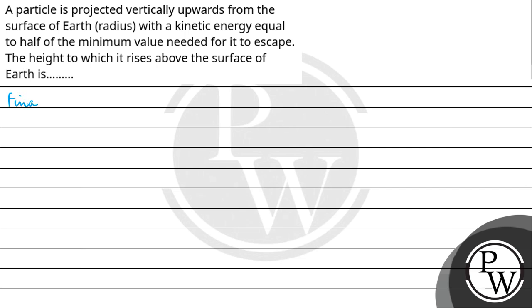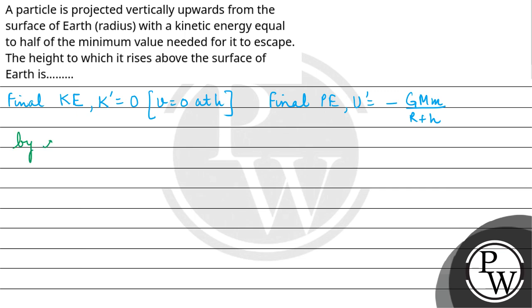So final kinetic energy, let's say K dash, will be zero because velocity at the highest point is zero. And final potential energy will be minus GM upon (R + H), because it is at height H from the surface of earth. So by conservation of energy, total initial energy is equal to total final energy.